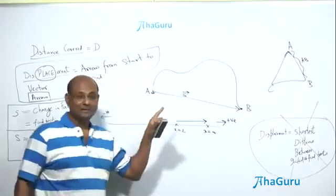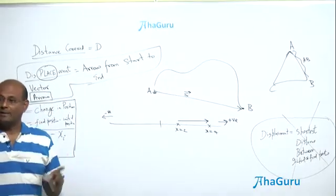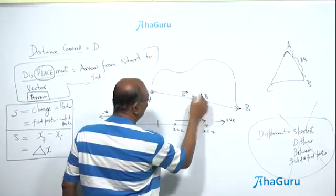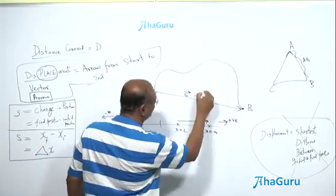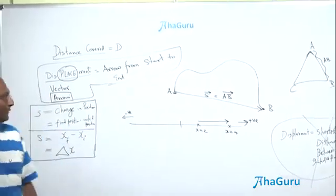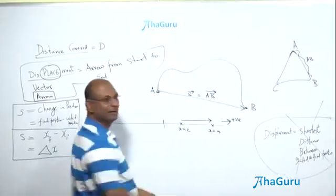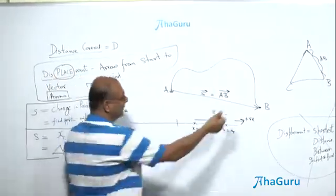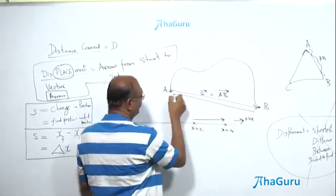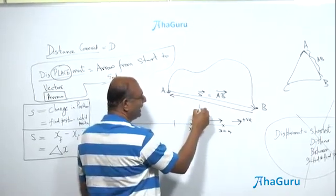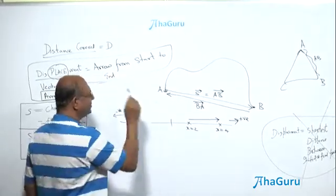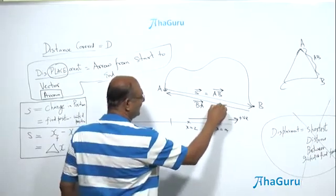But here I don't want just the length AB — I want the arrow from A to B. So I write it as A to B with an arrow marked on top. What happens if I walk from B to A? You write the arrow as B to A. Someone might say: why not write BA and mark the arrow like this, because that's the way it's going.